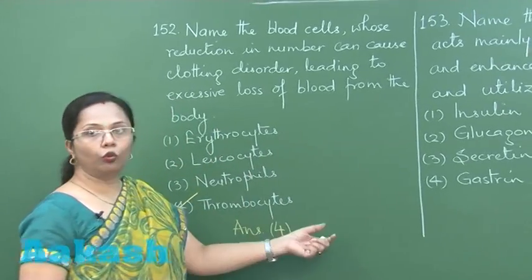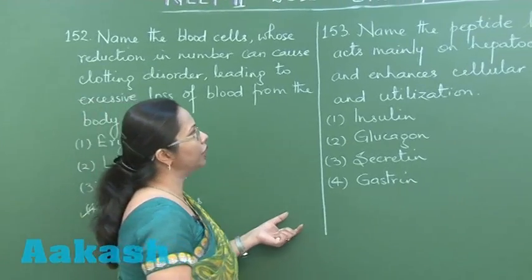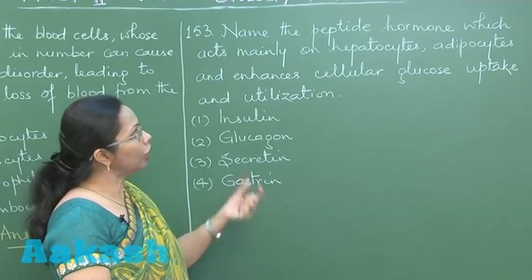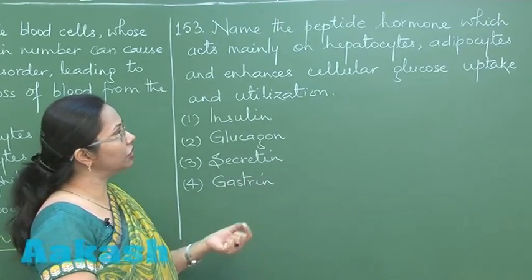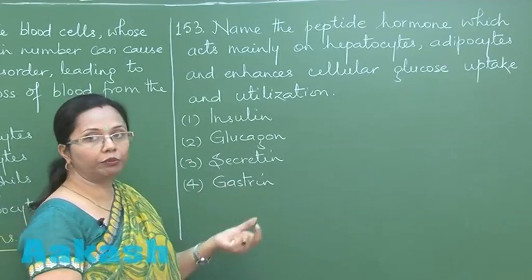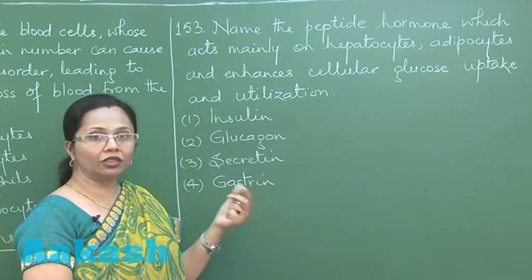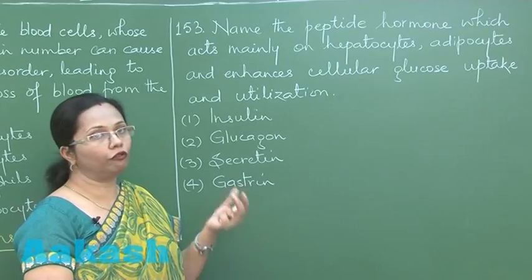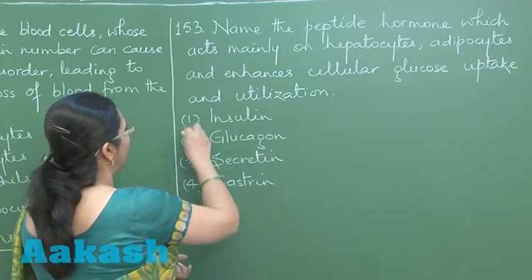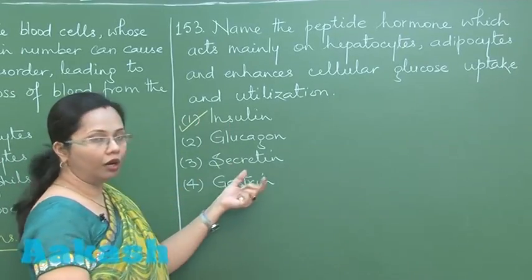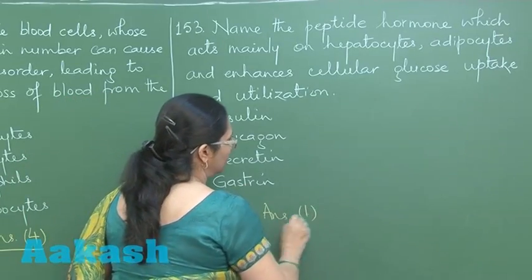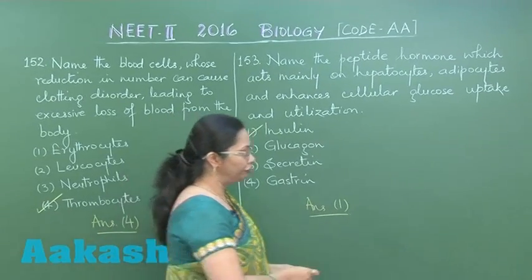Question 153: The peptide hormone that acts mainly on hepatocytes and adipocytes, enhancing cellular glucose uptake and utilization, thereby decreasing blood glucose levels. This hypoglycemic hormone is insulin, which is option number 1.